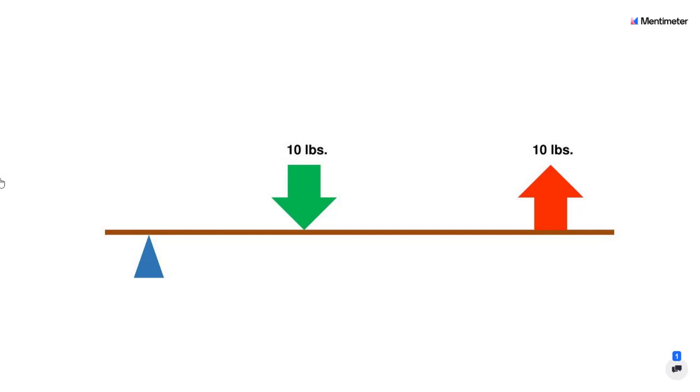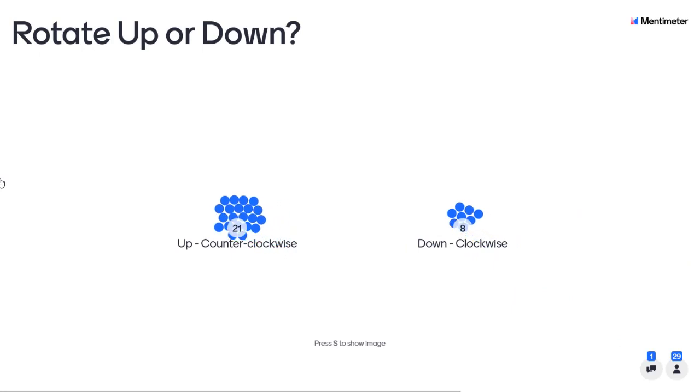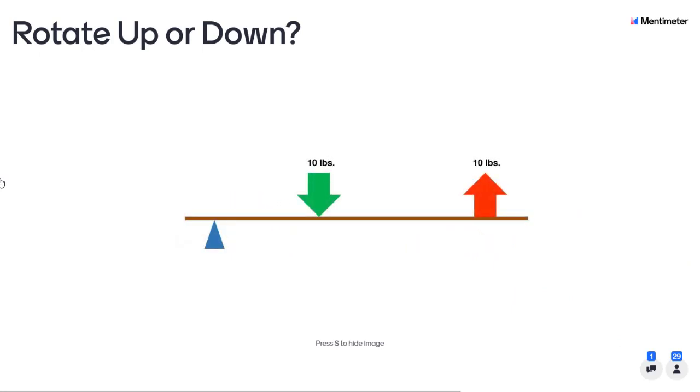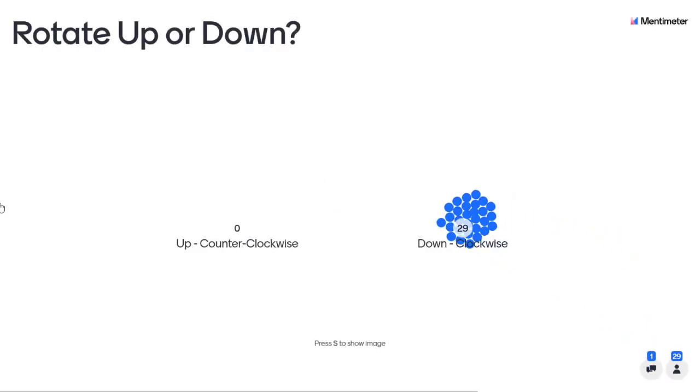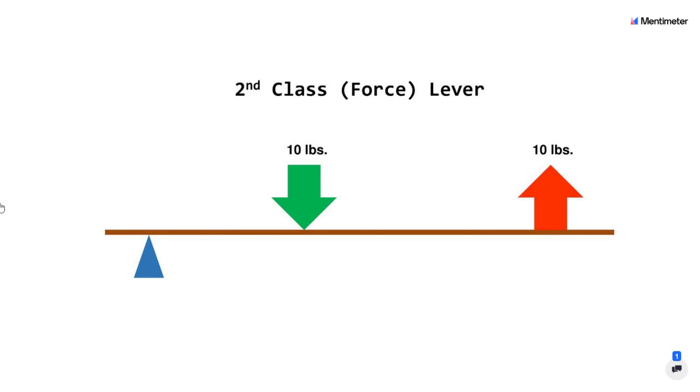But if we manipulate the direction of the force, remember a force is a push or a pull, and in this case weight is always down and tension is always a pull, we can start to use this machine to our advantage. In this case, weight in the middle, tension pulling up, or we can flip it and have tension in the middle and weight down, that's what determines the second or third class lever. Remember, it's what is in the middle that determines the class of the lever. In this case, I have a 10 pound load going down, and I have 10 pounds of tension pulling up, which way will this go?